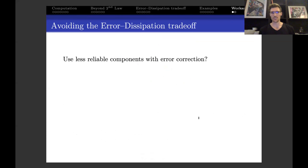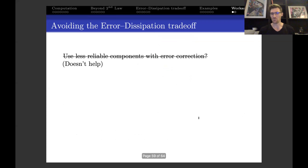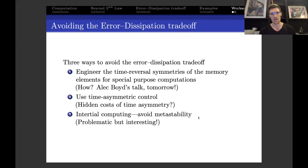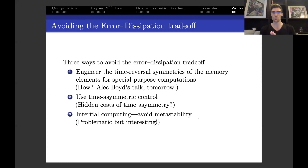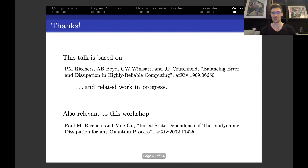How are we going to avoid this? How about using less reliable components and doing error correction? No, that's not going to work—Alec and I worked out in general that the scaling is not in your favor and you just can't avoid the error-dissipation trade-off. Except that Alec will give a talk tomorrow which gives some hint that maybe we can actually engineer the time-reversal symmetries of the memory elements for computation. Alternatively, we're left with possibilities of using time-asymmetric control or inertial computing where we avoid metastability—really interesting topics we're pursuing now. Looking forward to your questions and continued discussion.